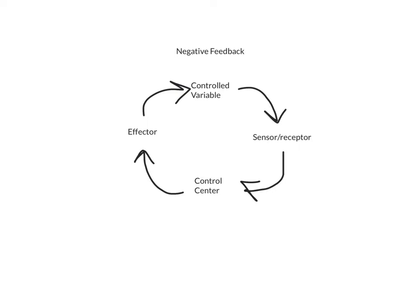So let's think about this in terms of temperature as an example. The first thing I need to know is where's the receptor for temperature? Well, the receptor for temperature is typically found in the skin, and it's often called a thermoreceptor because it does indeed sense temperature. So a thermoreceptor in skin would be the sensor. Next, it sends that information to the control center. In the case of temperature, the control center is in the brain — specifically a part called the hypothalamus, which is the part of your brain that knows whether it's hot or cold.